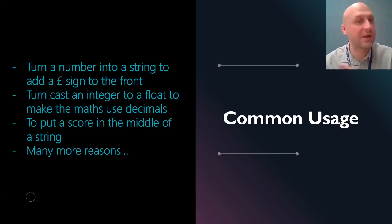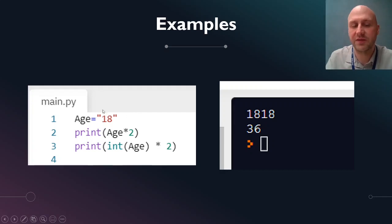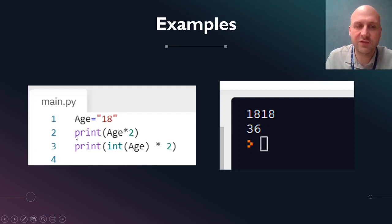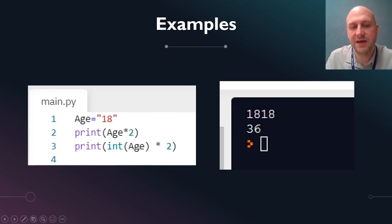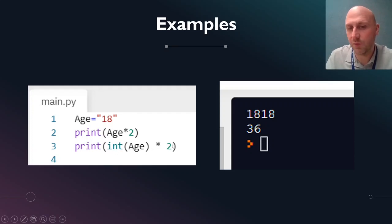Here is an example of how you cast a variable — that is, change it from one thing to another. As you can see here with age equals 18, this is a string. We know it's a string because it's got quotes around it. So if I do print age times 2, I get '1818', because it's a string. Whereas if I put int — integer — bracket, age, bracket, now that is going to attempt to get as much of an integer out of that as it can. And then multiply by 2, so now we've got 36.